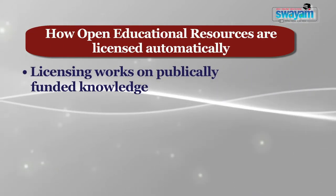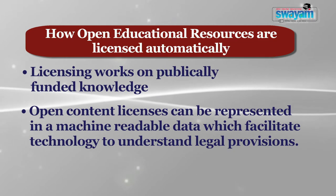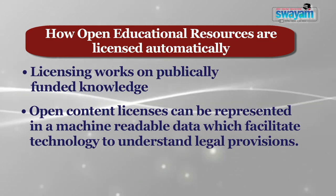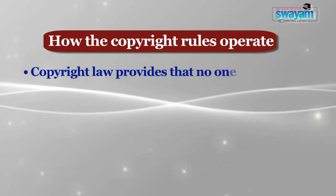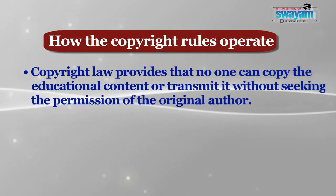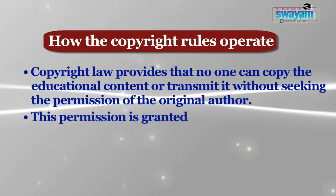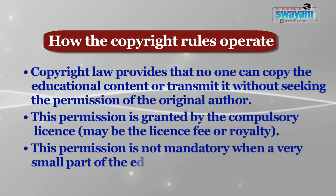Open content licenses can be represented in machine-readable data, which facilitates technology to understand legal provisions related to a particular document. All the digital environment available on the internet is subjected to copyright law. Copyright law provides that no one can copy the educational content or transmit it without seeking permission of the original author. There are some important relaxations granted under this law, such as permission granted by a compulsory license, which may be license-free or royalty-based. A number of legal issues are considered while creating open educational resources — intellectual property rights and copyrights are the significant considerations.